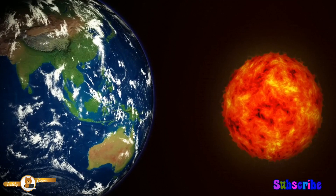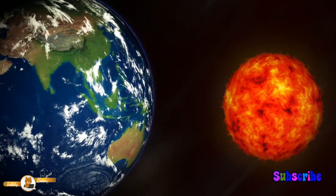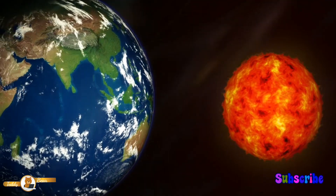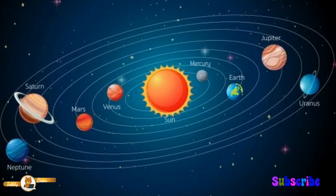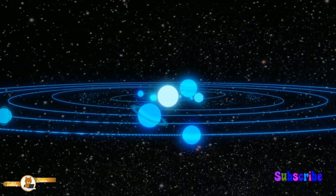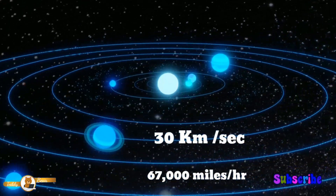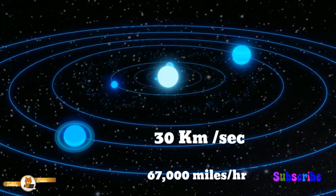In space, Earth rotates in two different ways. One way is rotating on its axis. In addition to that, it also moves around the Sun. It moves around the Sun with a speed of 30 km per second, that is 67,000 miles per hour.